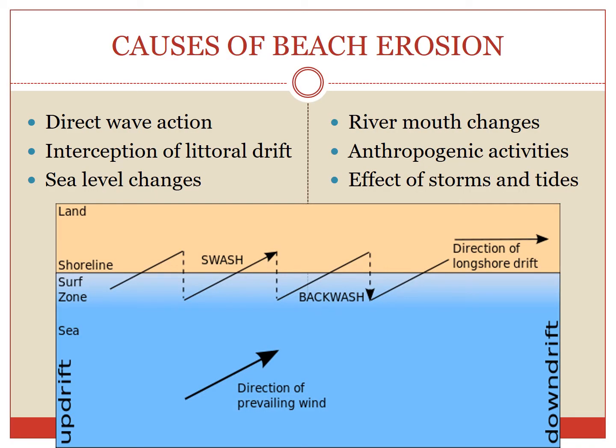Now, there are many causes of beach erosion. Some are: direct wave action, interception of the littoral drift, sea level changes, river mouth changes, anthropogenic activities, effects of the storms and the tides, and the effects of the shore relief.